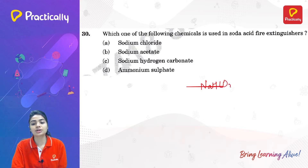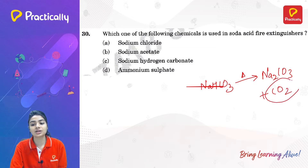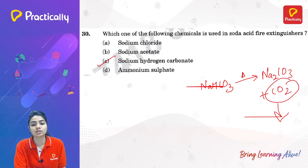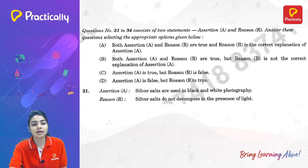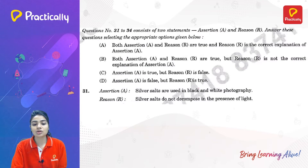Which chemical is used in the soda-acid fire extinguisher? NaHCO₃ (sodium hydrogen carbonate) is used, because when heated it forms Na₂CO₃ and releases carbon dioxide, which acts as the fire extinguisher. So sodium hydrogen carbonate is the correct answer.